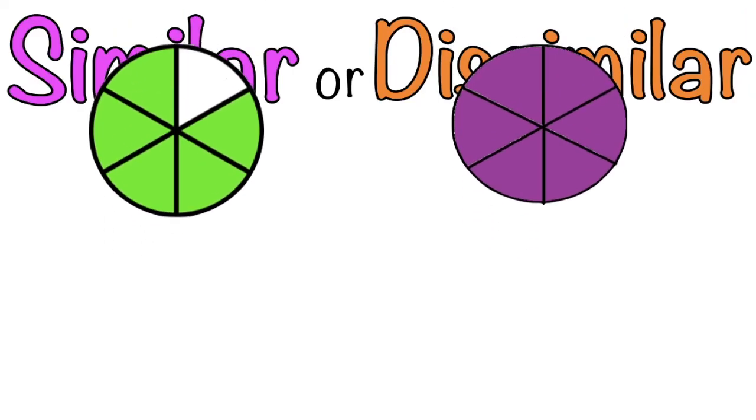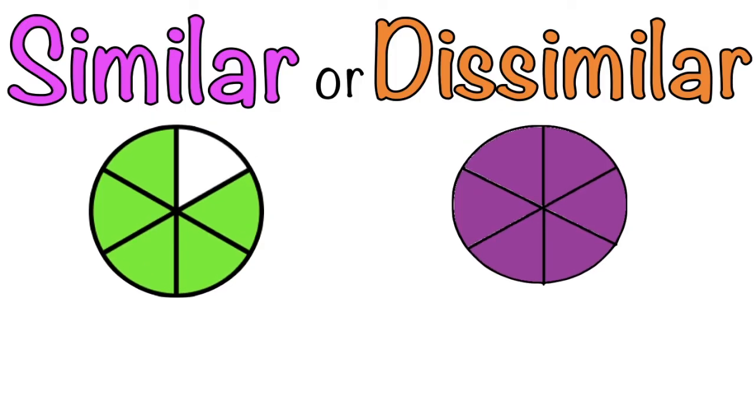How about this one? The first example is 5 sixths, while the second one is 6 sixths. Are they similar or dissimilar? Good job!